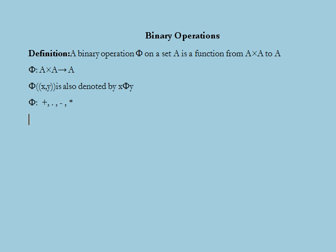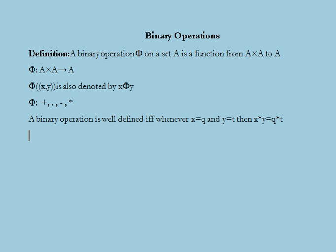Next we consider what it means for a binary operation to be well defined. A binary operation is well defined if and only if whenever X equals Q and Y equals T, then the binary operation on X and Y equals the binary operation on Q and T.